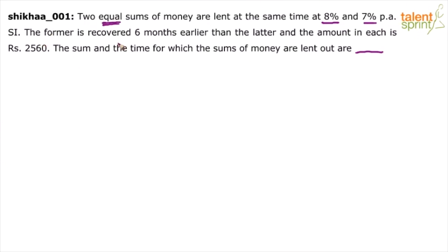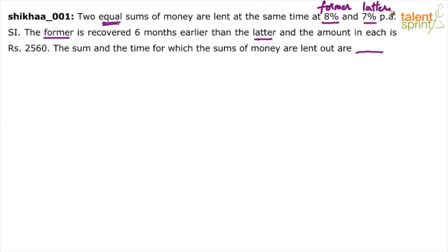The former is recovered 6 months earlier. What do we mean by former and latter? The latter is the next one; the former is the earlier one. So here, former refers to 8% and the latter refers to 7%. The former — the one lent at 8% — was recovered 6 months earlier than the latter.